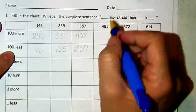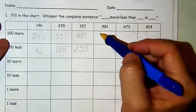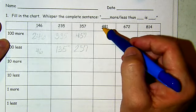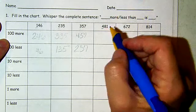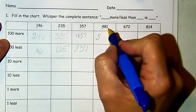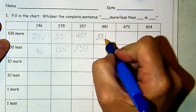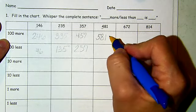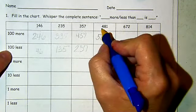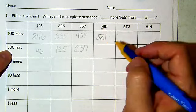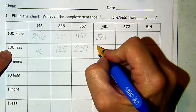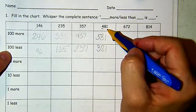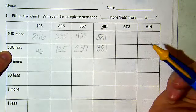Same thing here — look at the hundreds place. 100 more than 400 — one more than 400 is 500, so 481 becomes 581. 100 more than 481 is 581. 100 less — go back to that four. If I take one away, I have 381. One hundred less than 481 is 381.